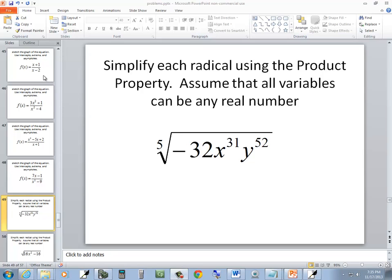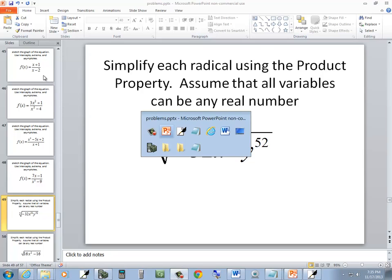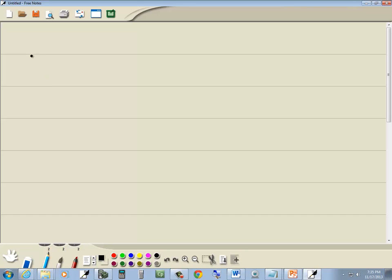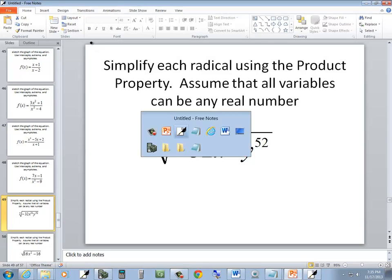In this problem, we want to simplify each radical using the product property. We've got the fifth root of negative 32, x to the 31st, y to the 52nd.